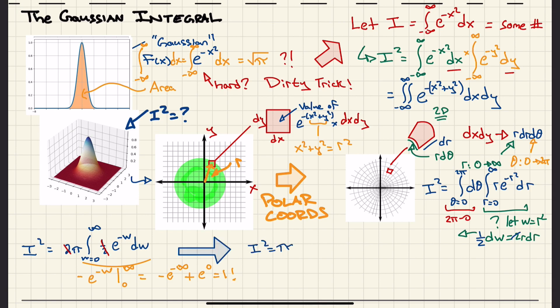We multiply that pi that was in front of the integral and we get i squared is equal to pi, or i, which is the integral that we wanted to solve in the first place, is the square root of pi. And that's how you evaluate this integral.